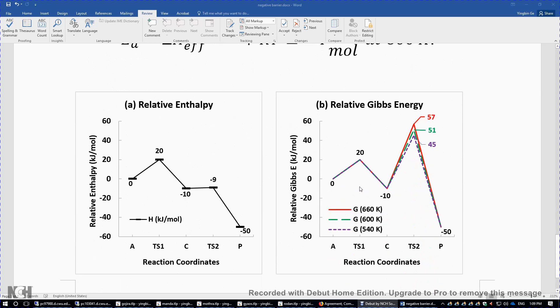To visualize the numbers, here are two graphs in that Journal of Chemical Education paper. This is relative enthalpy. A is used as a reference, so it's 0 here. TS1 is 20. C is the intermediate at -10. The enthalpy of TS2 is -9, and the product is -50. If you compare this -9 with this 0, you can see the enthalpy of transition state 2 lies below the initial reactant structure.